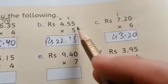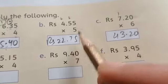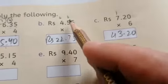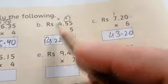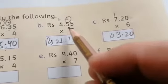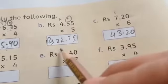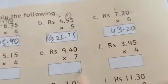Rupees 4.55 multiply by 5. 5 into 5 is 25. 5 into 5 is 25. Plus 2 is 27. 5. 4 times 5 is 20. Plus 2 is 22. Rupees 22.75.